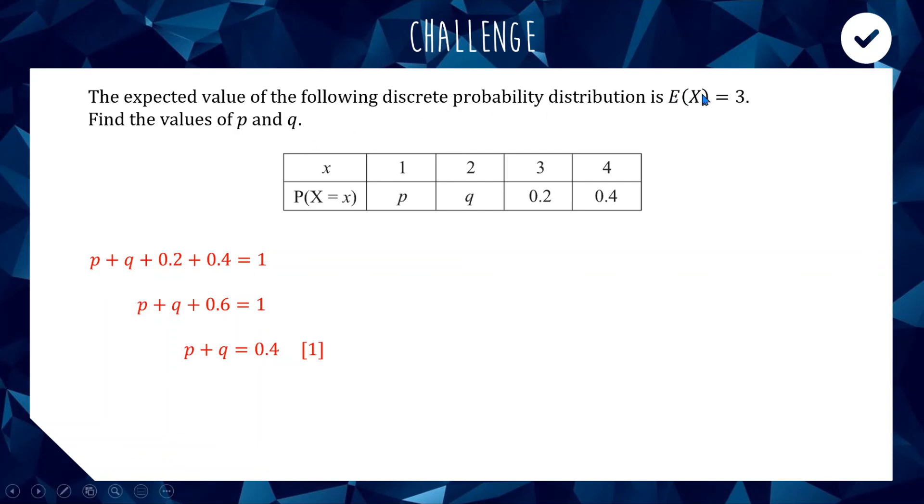The question tells us the expected value equals 3. If we perform our calculation by taking our four outcomes multiplying them by our four probabilities and adding them together, we set that equal to 3. So 1 times p plus 2 times q plus 3 times 0.2 plus 4 times 0.4 equals 3. Simplifying, we get p plus 2q plus 0.6 plus 1.6 equals 3, so p plus 2q equals 0.8. There's our second equation.